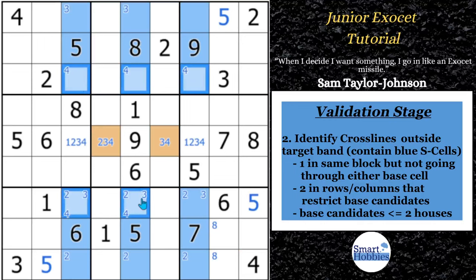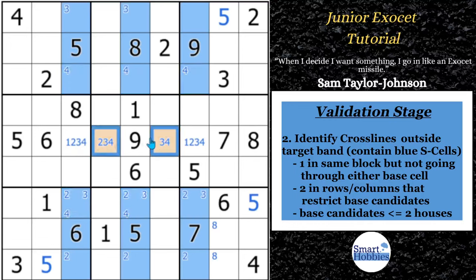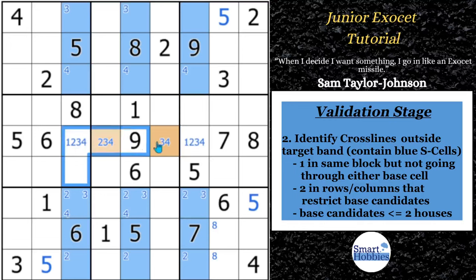Now we make a test: we want to see if there's a restriction on how many twos, threes, and fours we can put in the rows of these cross lines outside the band. There's a two right here — that means a two can't be in any of those cells. And there's a two right here that also can't be in those cells. So a two is limited to two of the rows in the cross lines. Threes are similarly limited to just two rows — rows one and seven of the cross lines. And the fours are limited to just two rows — rows three and seven in the cross lines. So we have the restrictions we need.